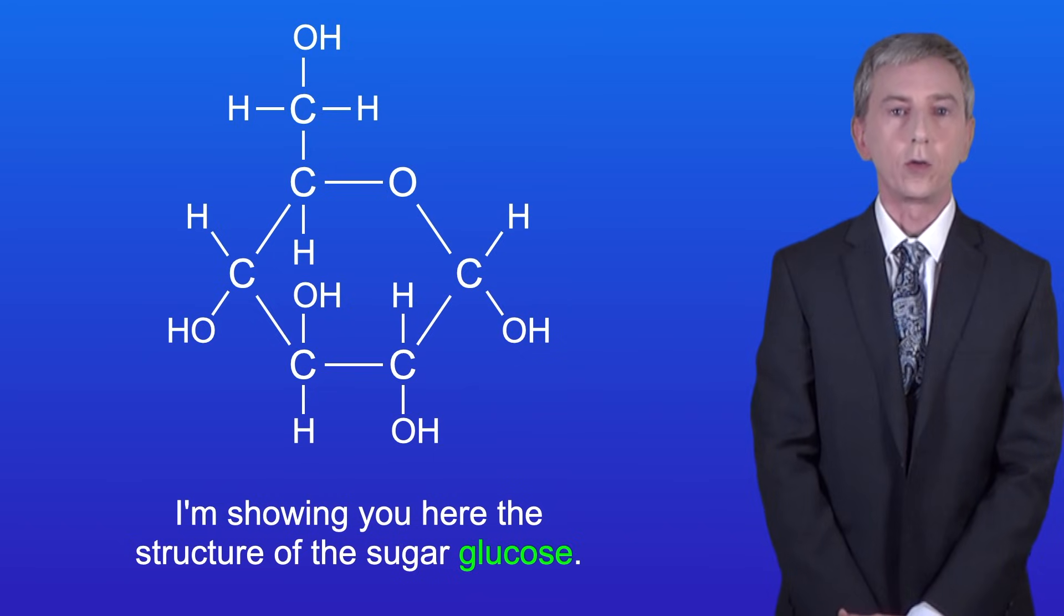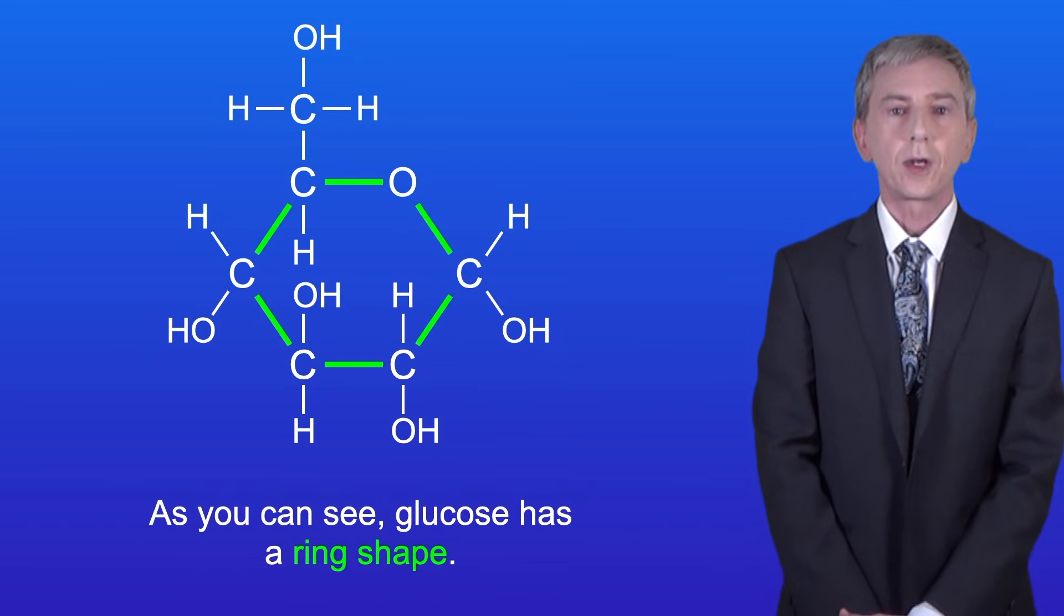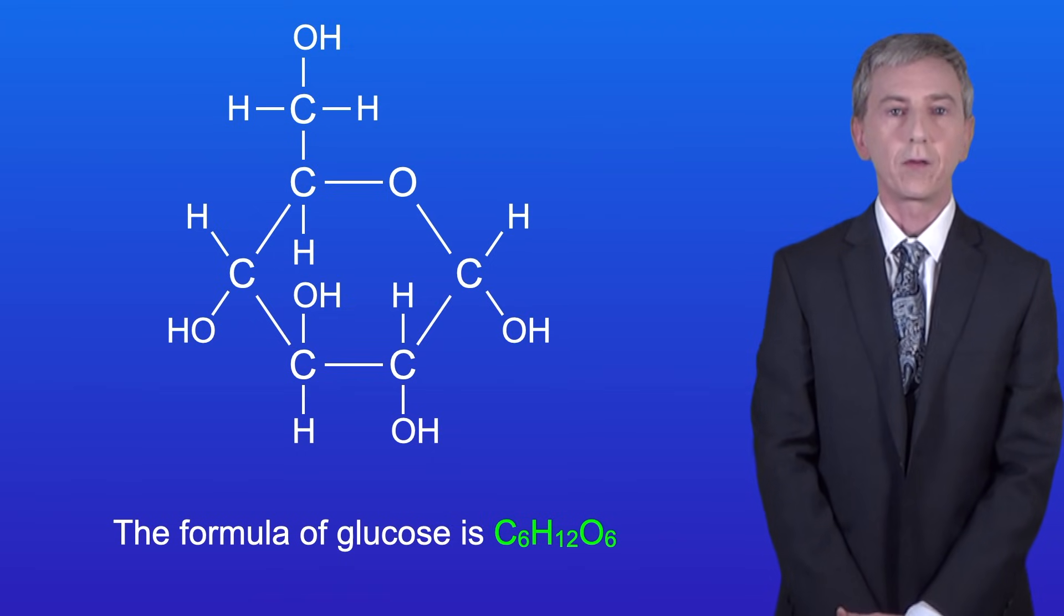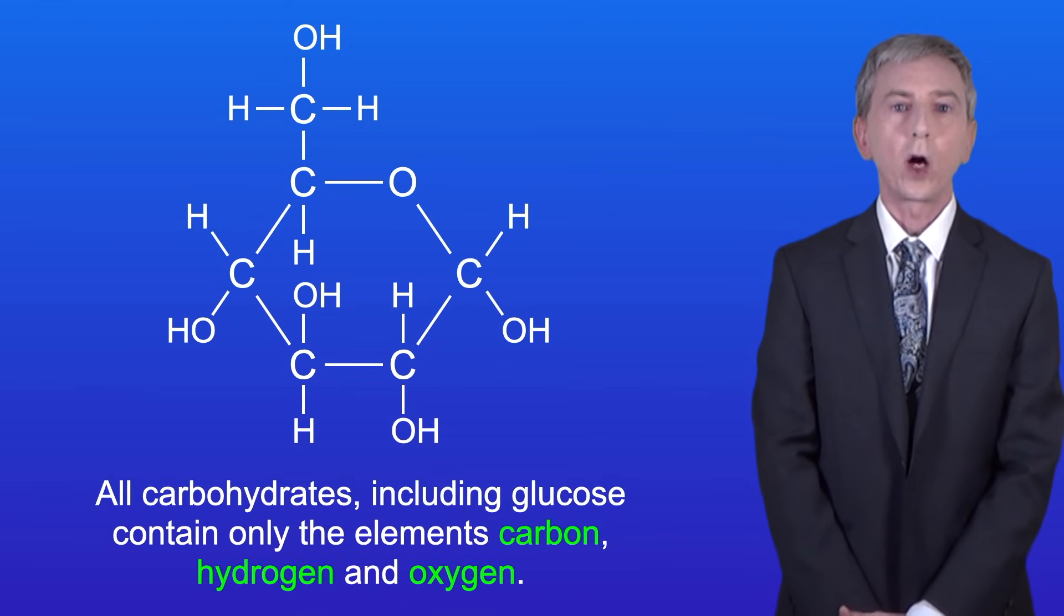I'm showing you here the structure of the sugar glucose. As you can see glucose has a ring shape. The formula of glucose is C6H12O6. All carbohydrates including glucose contain only the elements carbon, hydrogen and oxygen.